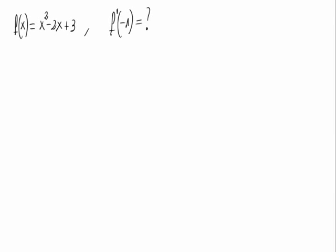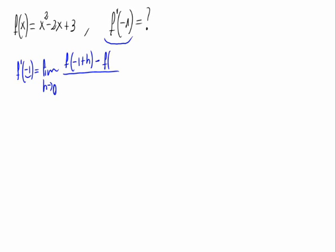Given the function f of x equals x squared minus 2x plus 3, let's calculate its derivative at minus 1 using the definition. The definition says that this is the limit when h approaches 0 of f of minus 1 plus h minus f of minus 1, divided by h.